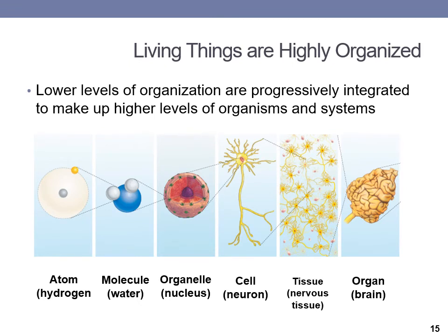Living things are highly structured and highly organized. Lower levels of organization are progressively integrated to make up higher levels of organisms and systems. At the chemical and molecular level, atoms — the building blocks of all matter — combine to form molecules like oxygen and hydrogen bonding to produce a molecule of water. Molecules interact to form organelles, structures inside of cells, which are the basic unit of life. All living things are made up of a single cell like bacteria, or many cells like plants and animals. The next level of organization is the tissue level, where a group of similar cells come together to perform a specific function — for example, nerve cells that interact to form nervous tissue.